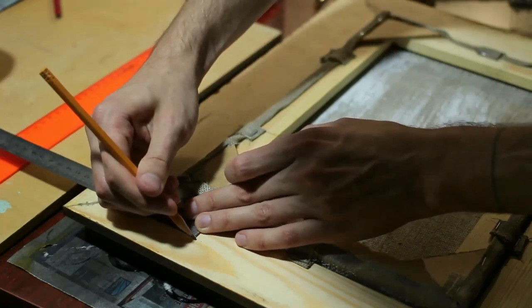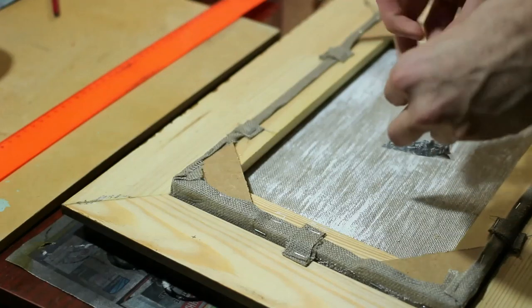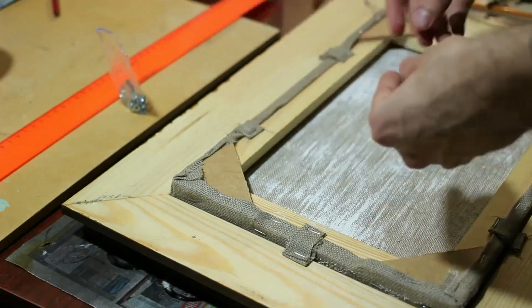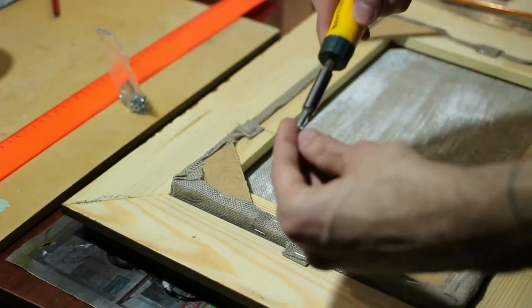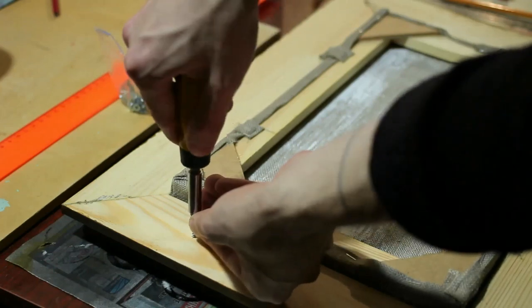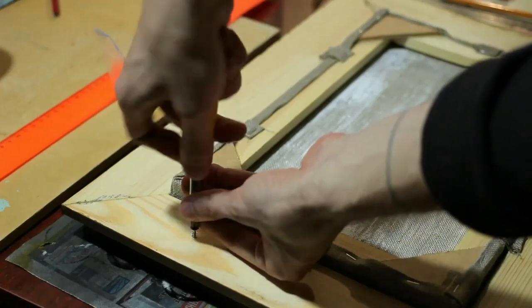Now we just have to attach the string to hang it on the wall. Mark equal segments between one quarter and one third of the frame height, so the picture will not lean forward and the string will not be visible from above. Choose the size of the screws according to the frame thickness and its weight. My frame is massive, but the total weight is low, so small ones will do it.